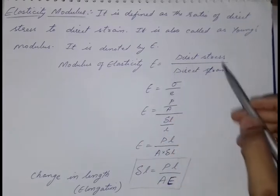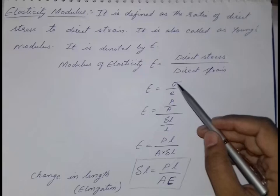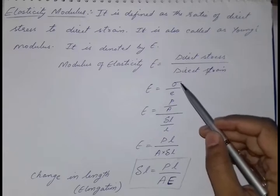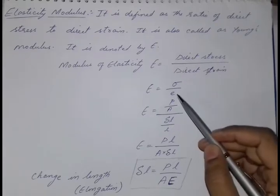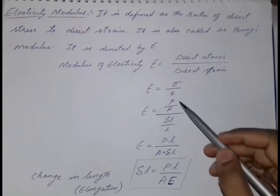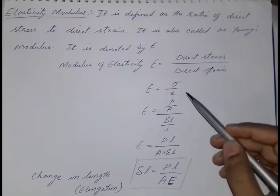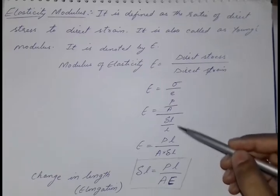Capital E can be written as direct stress by direct strain. Stress is denoted in terms of sigma and strain is small e. So stress can be written as P by A, load by area, and strain as change in length by original length.